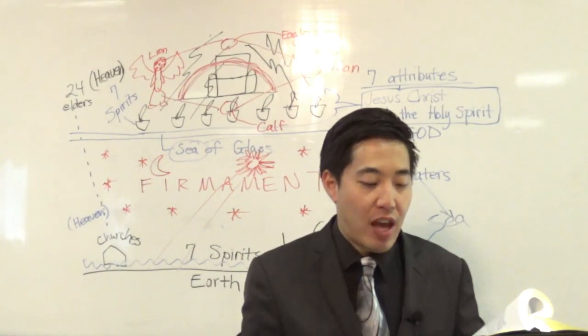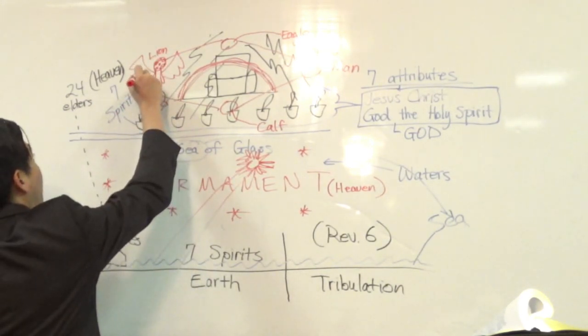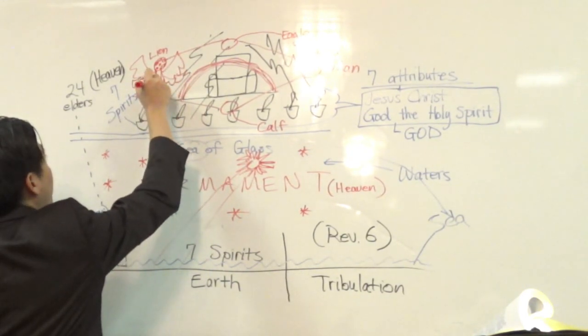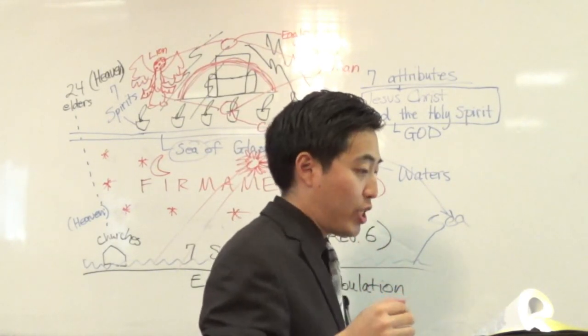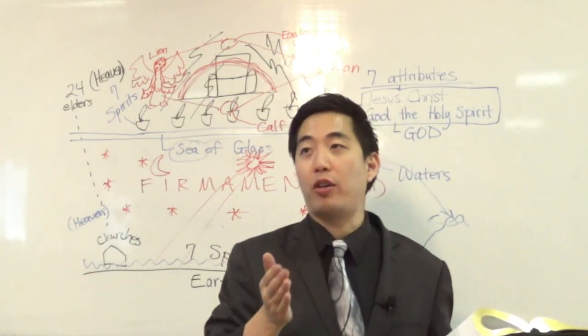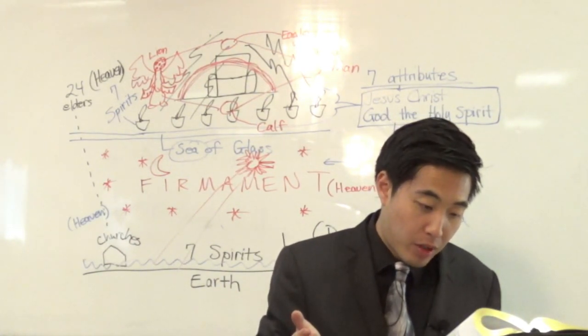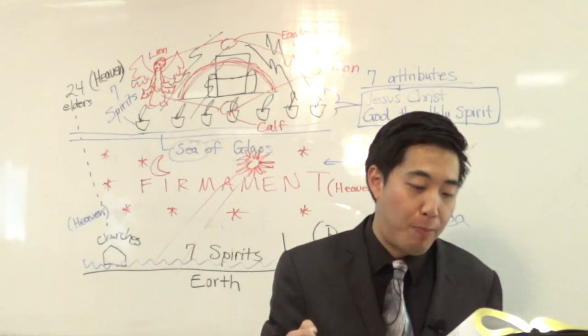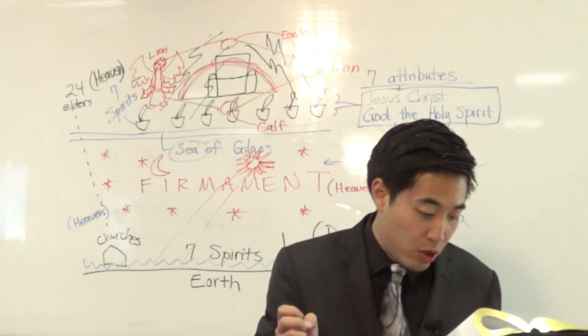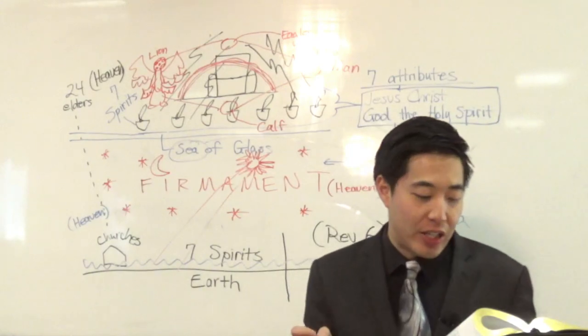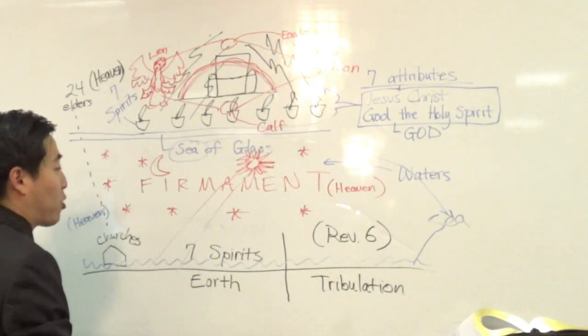So let's start with Revelation chapter 4 and verse 8. And the four beasts had each of them, how many wings? Six wings about him. So each of these cherubims have six wings here. Now, look at Ezekiel, however. Look at Ezekiel 1. Keep your hand there. We're going to look at the contradictions. If you're an atheist, you definitely want to bookmark this so you can find contradictions in your King James Bible.